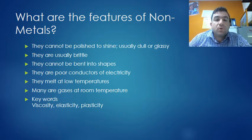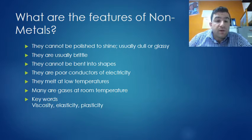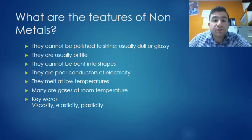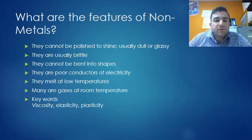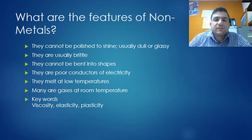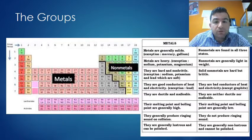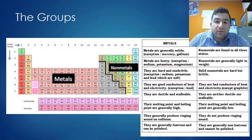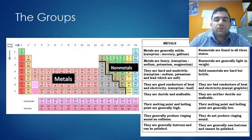What are the features of non-metals? They can't be polished to shine - they're usually dull or glassy. They're usually brittle. They cannot be bent into shapes. They are poor conductors of electricity. They melt at low temperatures. Many are gases at room temperature. The key words for non-metals are viscosity, elasticity, and plasticity. Viscosity means it flows like a liquid. These are the groups: metals are generally solid, non-metals are found in all three states. Non-metals are generally light in weight, metals are heavy.